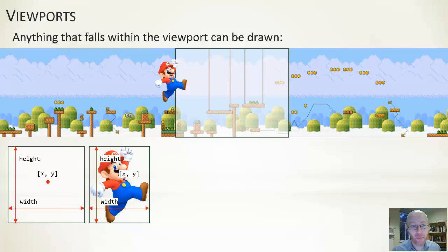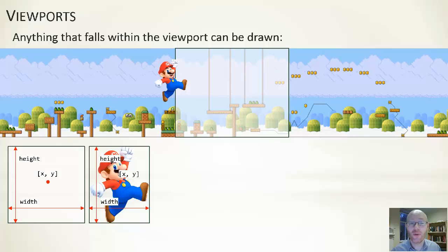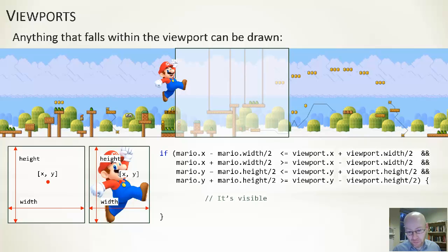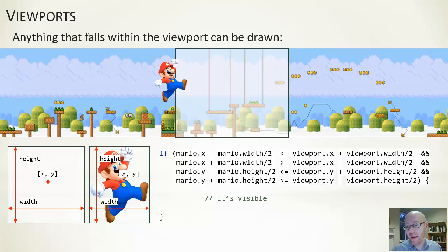Given that setup, these are effectively two rectangles. I want to work out if the Mario rectangle either is contained within or intersects with the viewport. This can be done as shown here with four conditions. If all four of them are true then we say that it is visible, and if any of them are false then Mario isn't found within the viewport.